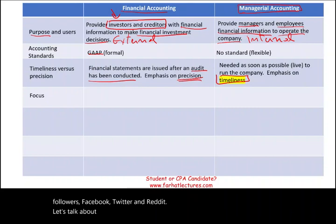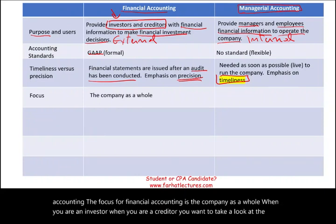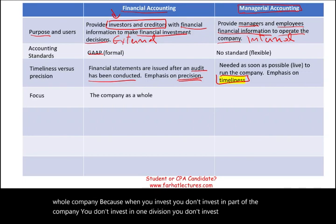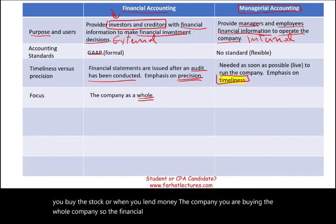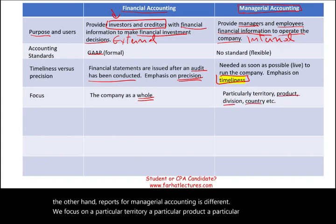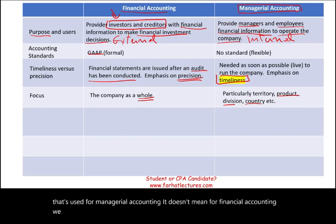Now let's talk about the focus. The focus for financial accounting is the company as a whole. When you are an investor or creditor, you want to look at the whole company because when you invest, you don't invest in just one division or one product — you are buying the whole company. So financial statements cover the entire company. On the other hand, managerial accounting reports focus on a particular territory, product, division, or country — breaking down the company's information into specific segments.